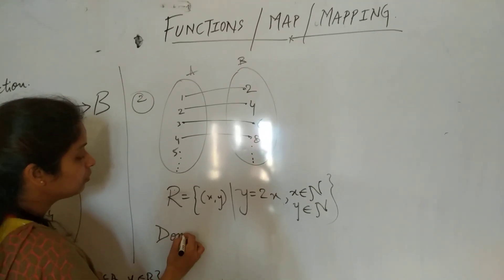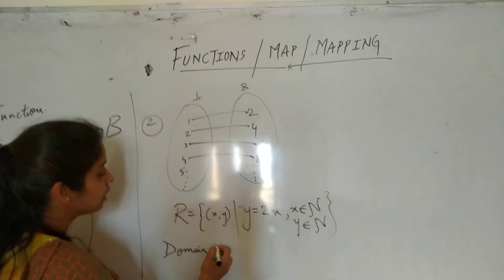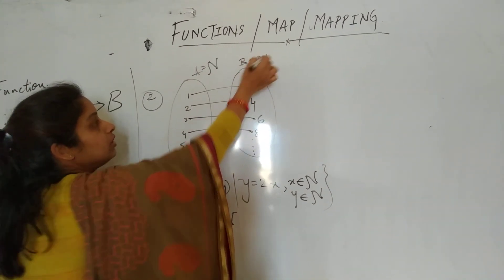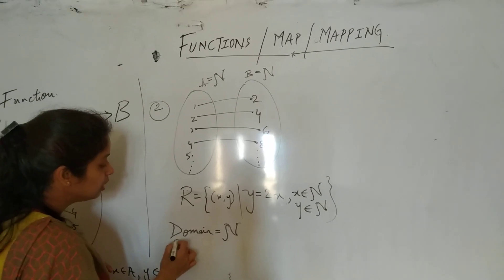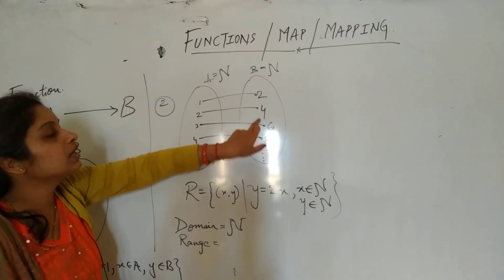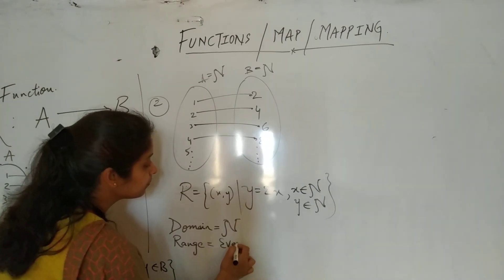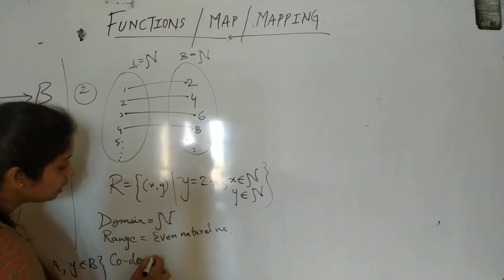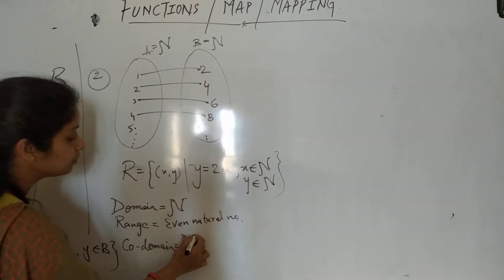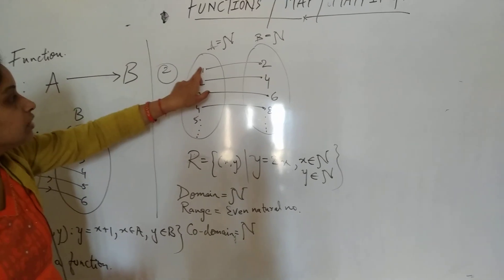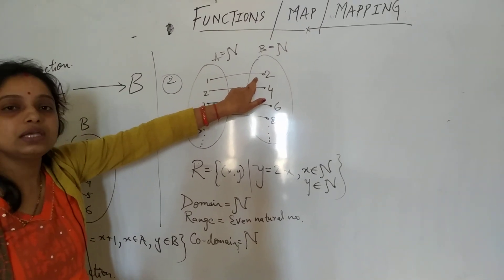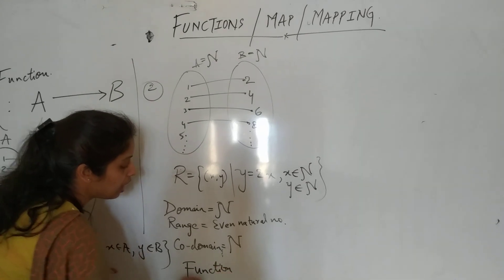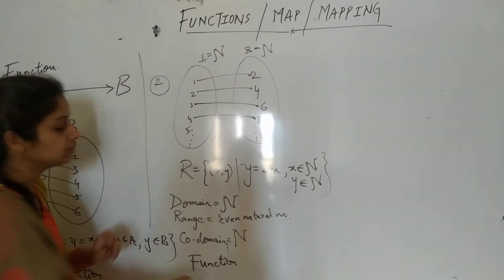So what is the domain of this set? The domain is the set of natural numbers because A is the set of natural numbers. B is also the set of natural numbers, so domain is the set of natural numbers. Range — what is range? Range is always an even number, so range is the even natural numbers. Co-domain is the whole set, so it is again N. We can see that each element of set A has a unique image in set B. That is why this relation forms a function.